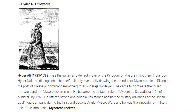Hyder Ali of Mysore (1721–1782) was the Sultan and de facto ruler of the Kingdom of Mysore in southern India. Born Hyder Naik, he distinguished himself militarily and rose to the post of Dalawai (Commander-in-Chief) under Krishna Raja Wadiyar II. He came to dominate the monarch and the Mysore government, becoming the de facto ruler as Sarvadhikari (Chief Minister) by 1761. He offered strong anti-colonial resistance against the British East India Company during the First and Second Anglo-Mysore Wars and was the innovator of the military use of iron-caged Mysorean rockets.